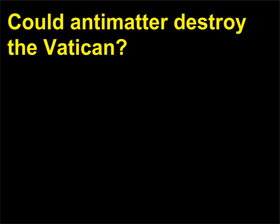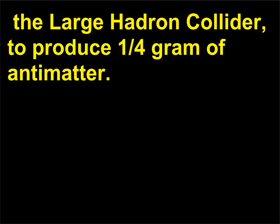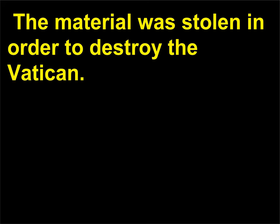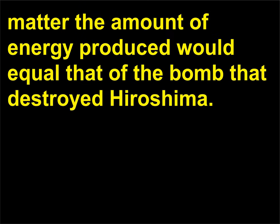Could antimatter destroy the Vatican? In Dan Brown's novel Angels and Demons, physicists at CERN use the LHC (the Large Hadron Collider) to produce one-fourth gram of antimatter, which was stolen in order to destroy the Vatican. It is true that if one-fourth gram of antimatter were to completely annihilate with one-fourth gram of matter, the amount of energy produced would equal that of the bomb that destroyed Hiroshima.